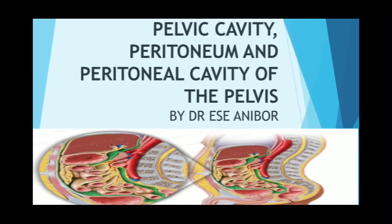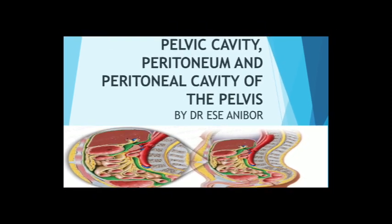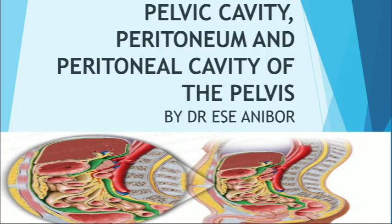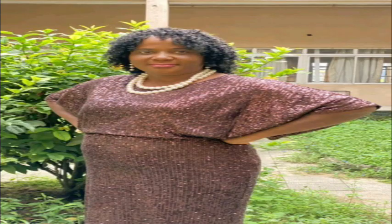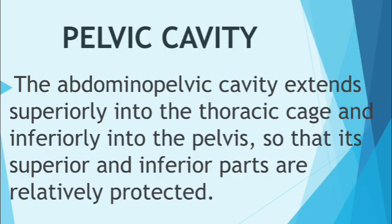Welcome once again to this YouTube channel. Today's topic is the pelvic cavity, peritoneum, and peritoneal cavity of the pelvis. The abdominopelvic cavity extends superiorly into the thoracic cage and inferiorly into the pelvis, so its superior and inferior parts are relatively protected. The abdomen is continuous with the pelvis — there is really no demarcation. So when you have perforating wounds in either the thorax or the pelvis, the abdominopelvic cavity and viscera could be affected.